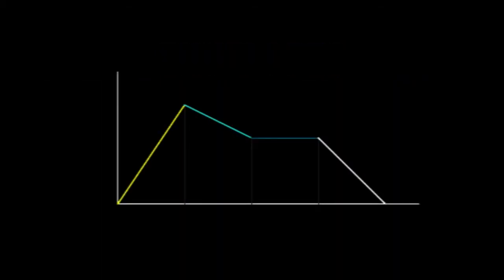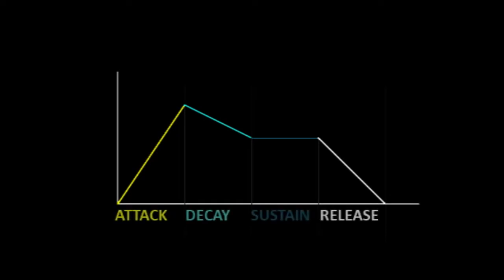In synthesizers, amplifier envelopes break up a sound into four events or parts: attack, decay, sustain and release, or ADSR. This point here is where a key is pressed, and this point here is where a key is released. The envelope shape between these points represents the volume and tone of our sound while a key is being held.